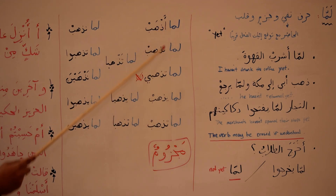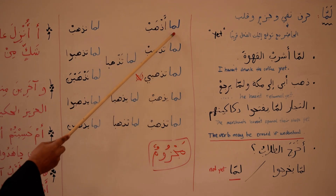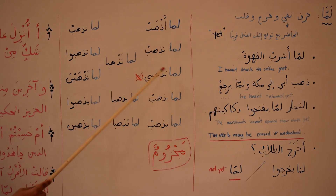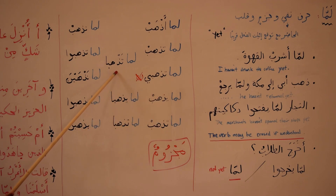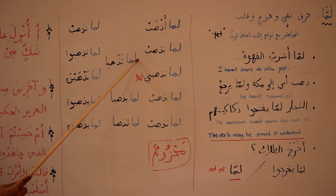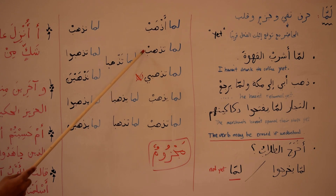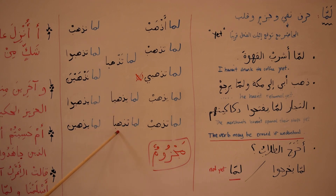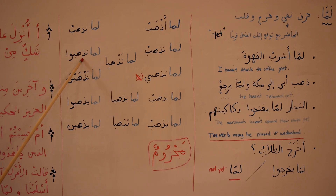In terms of conjugation, it's exactly like لم: لما أذهب, لما تذهب, لما تذهبي, لما يذهب, لما تذهب, لما يذهب, لما تذهب, لما تذهبنا, لما يذهب, لما يذهبنا.